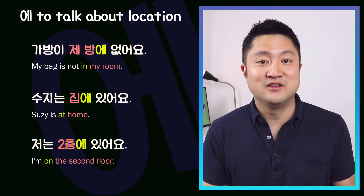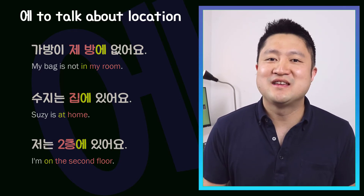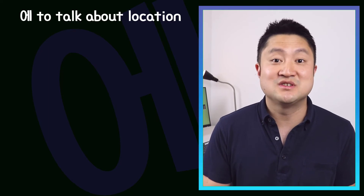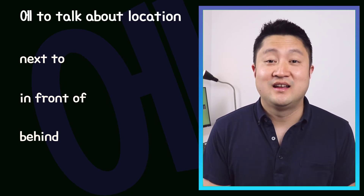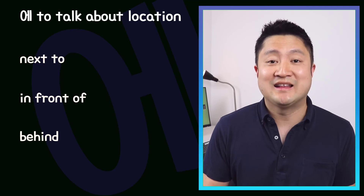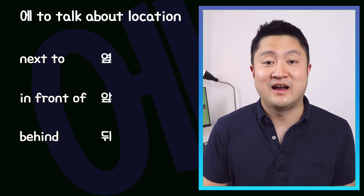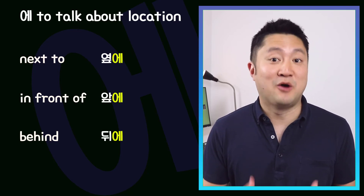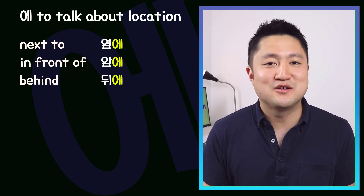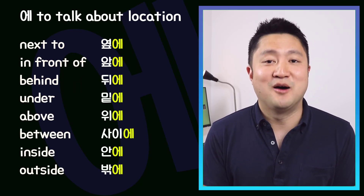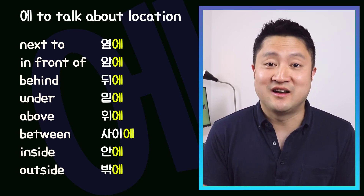While in English it's important to differentiate the use of these prepositions, in Korean we simply use 에, and the conceptual meaning of 'in', 'at', and 'on' is understood through context. One other important point is that in English we have different prepositions to specify location — next to, in front of, behind, and so on. In Korean, we form these by adding nouns to 에: 옆에 means 'next to', 앞에 means 'in front of', and 뒤에 means 'behind'. Other prepositions following this pattern include 밑에 (under), 위에 (above), 사이에 (between), 안에 (inside), and 밖에 (outside).